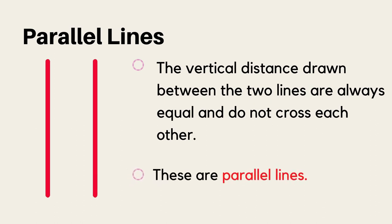Now look at these two lines. The vertical distance drawn between two lines that are always equal and do not cross each other are called parallel lines.